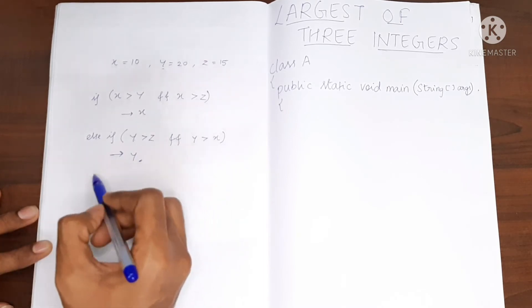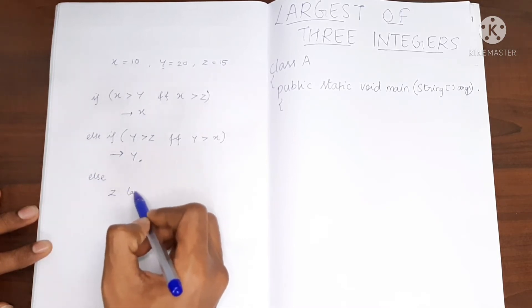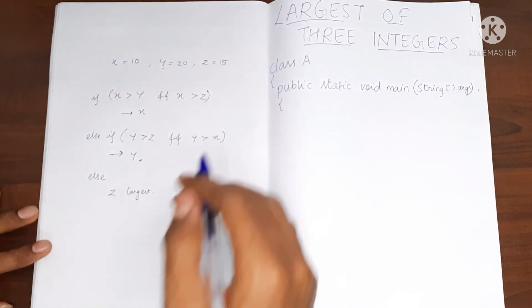This is the print statement. In the else case, z is the largest one. It's that simple. Let's write the program.